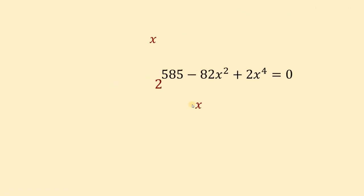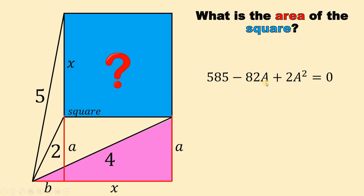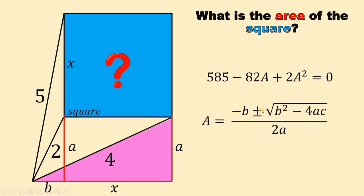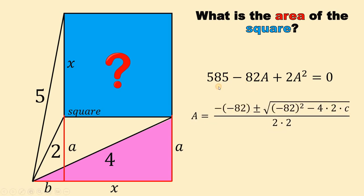Recall that the area of the square is x², so let A = x². Our equation becomes 2A² − 82A + 585 = 0. Using the quadratic formula — negative b plus or minus square root of b² minus 4ac, all over 2a — the coefficient of A² is a = 2, the coefficient of A is b = −82, and the constant term is c = 585.